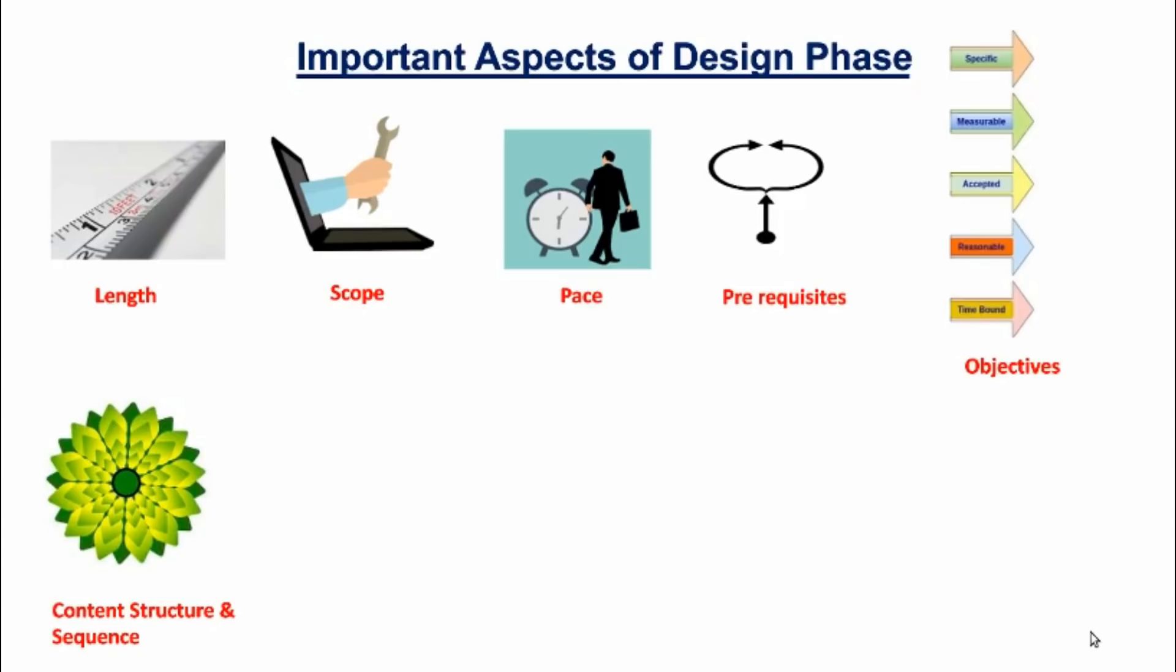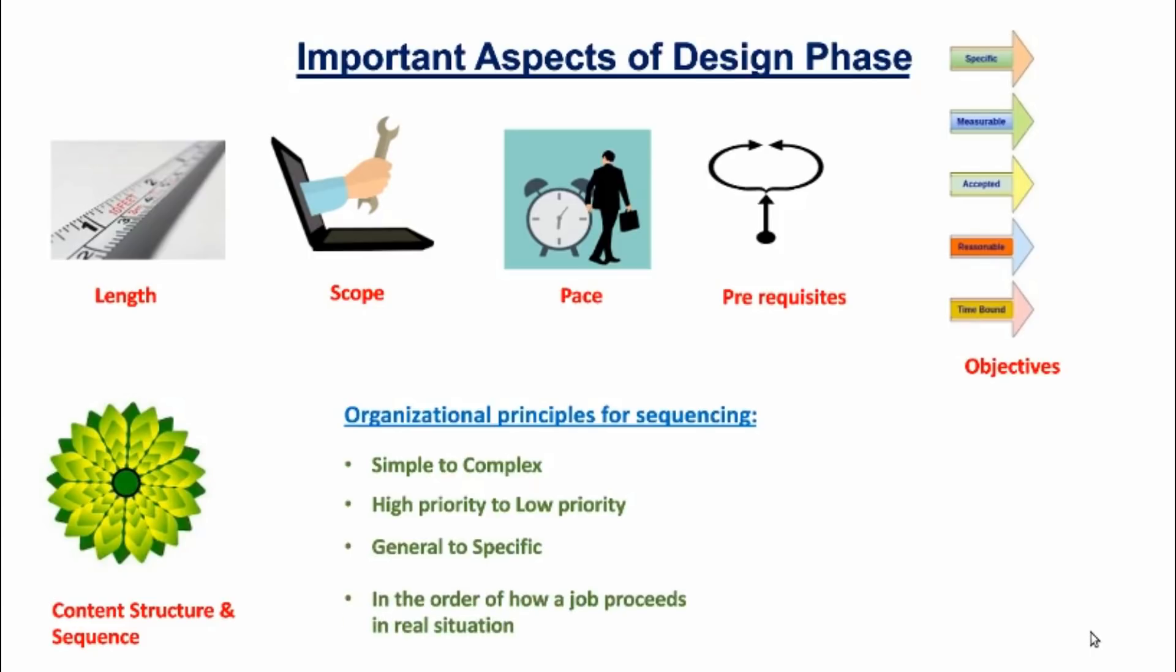That is, in which way and what structure we want to design our content. We can begin to organize our content by deciding an order and flow of the material. We can also choose some organizational principles for the sequencing. For example, simple to complex, high priority to low priority, general to specific, or in the order of how a job proceeds in the real world.